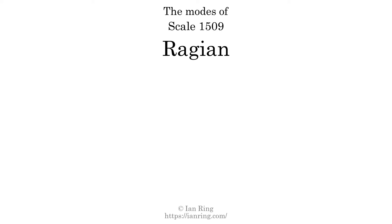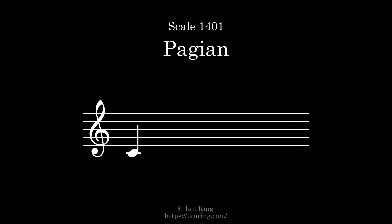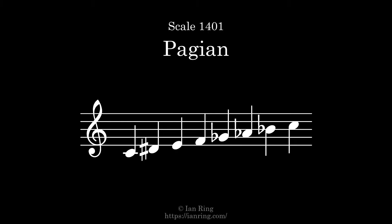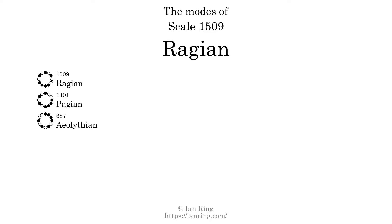This scale has 7 modes. The first mode is itself. The second mode is scale 1401, also known as Pajan. It sounds like this. The third mode is scale 687, also known as Eolithian. It sounds like this.